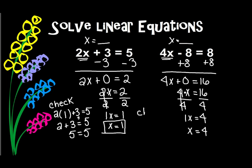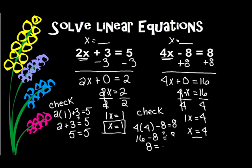Once again, I want to check to make sure that I did this correctly. So I'm going to have 4 times x, minus 8, and if I'm correct, that should equal 8. Well, x is 4, so I'm going to put 4 in there. 4 times 4 is 16, minus 8, and if I'm correct, it should equal 8. Well, 16 minus 8 is 8, and since 8 equals 8, I know I'm right. So x equals 4 is a solution to this linear equation.